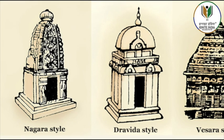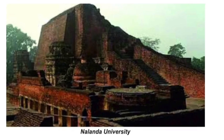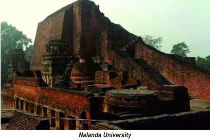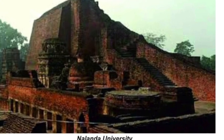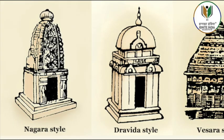The Lad Khan temple at Aihole in Karnataka seems to be inspired by the wooden-roofed temples of the hills, except that it is constructed out of stone. The Hoysaleshvara temple, Lord of the Hoysalas, at Halebidu in Karnataka was built in dark schist stone by the Hoysala king in 1150.